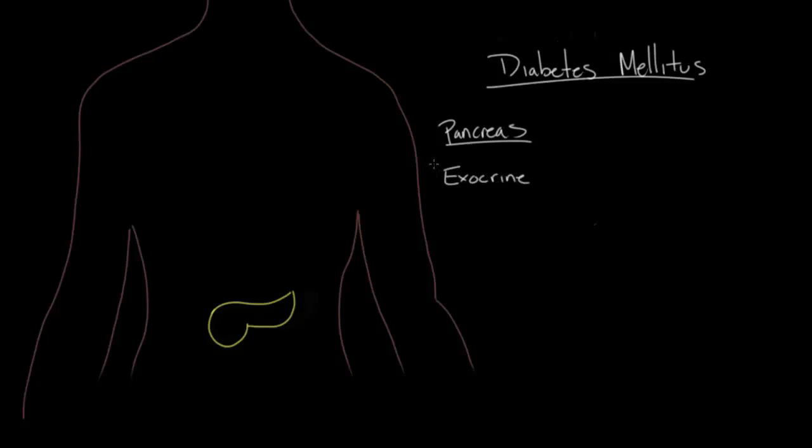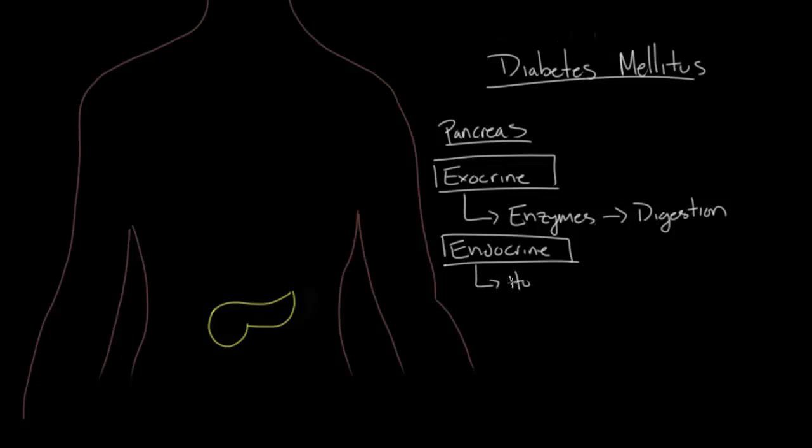The first function is exocrine. What this means is that the pancreas secretes enzymes into the digestive tract, which then chemically digests food and helps your body absorb the nutrients we eat, so it helps with digestion. But the pancreas also has some endocrine function, and what this means is that it produces hormones. And specifically for the pancreas, these hormones help the body with metabolism.